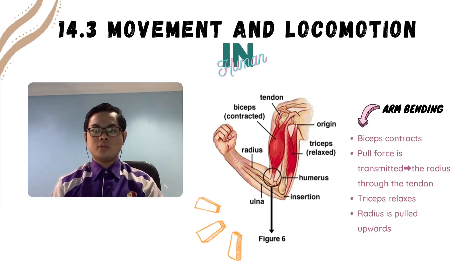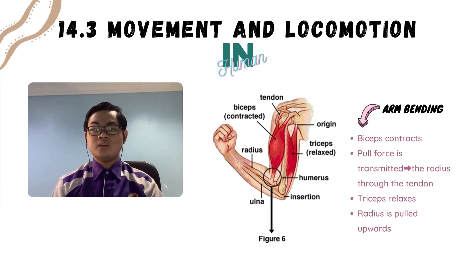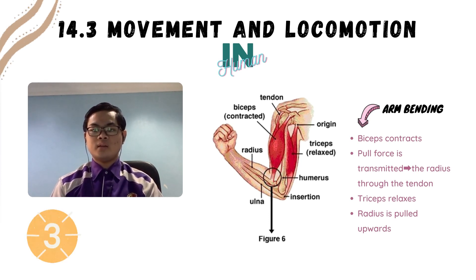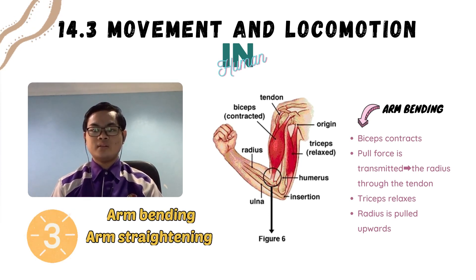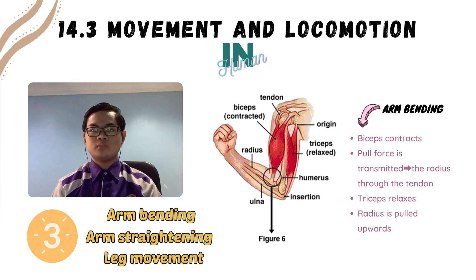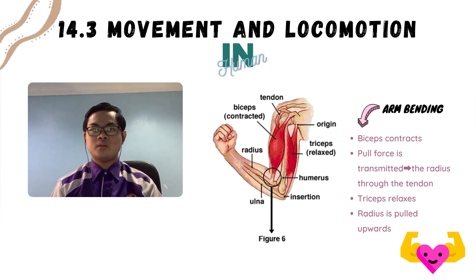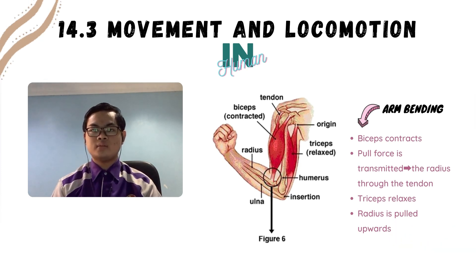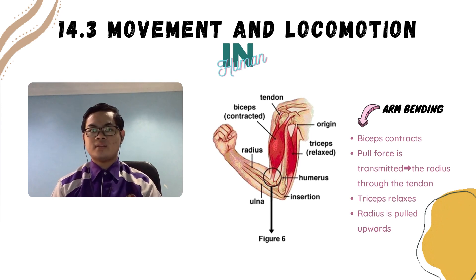Let's start off with the first part in the topic, which is movement and locomotion in humans. There are three main mechanisms in this part: arm bending, arm strengthening, and leg movement. Arm bending is when the biceps contracts and the pull force is transmitted to the radius through the tendon. At the same time, the triceps relax.